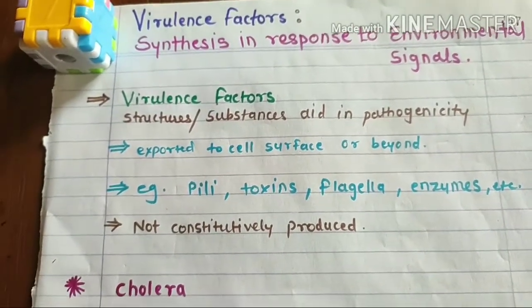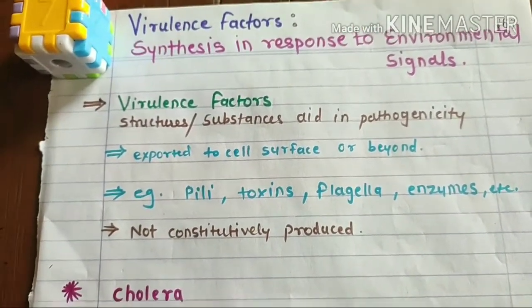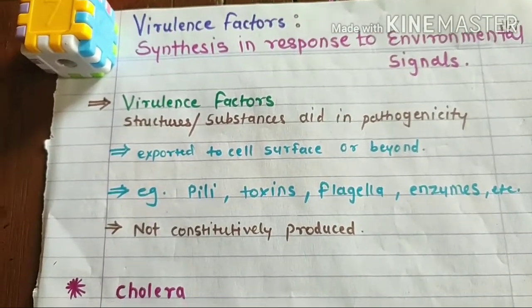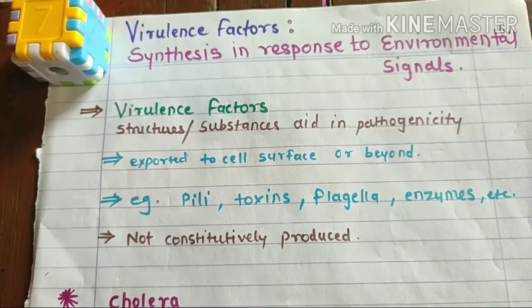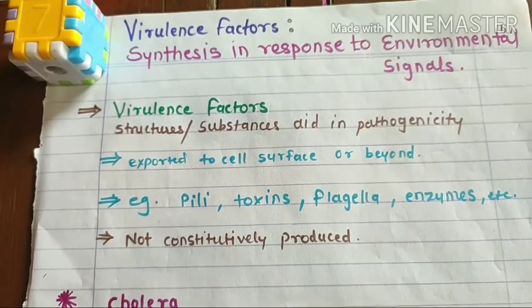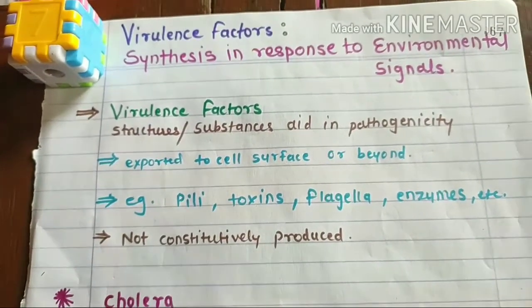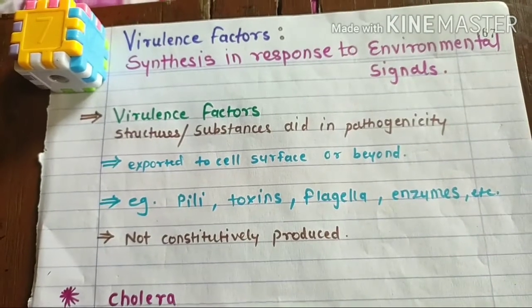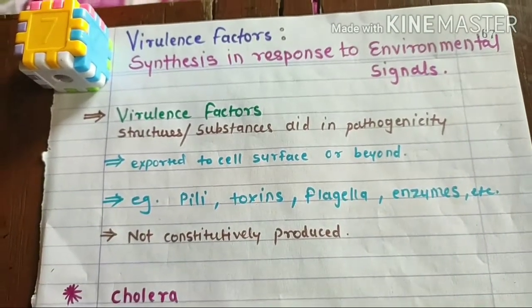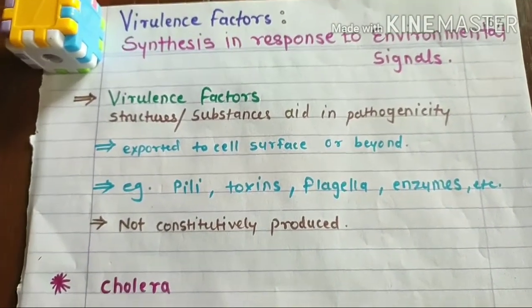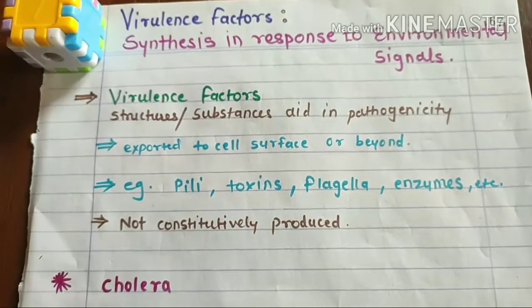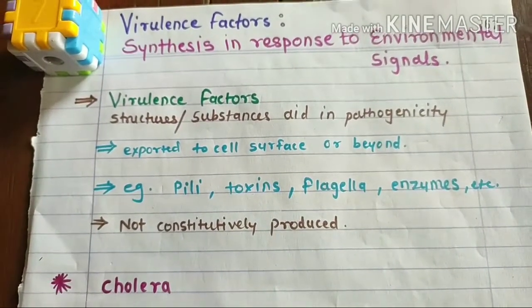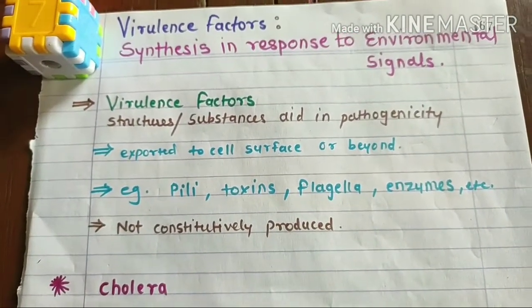If it is pili, it will be exported to the surface — pili is on the surface, and if it is flagella, it will also be on the surface of the pathogen. If it is an enzyme or toxin, it will be exported beyond the surface — it will be injected into the host or released in the environment. This is how virulence factors work.